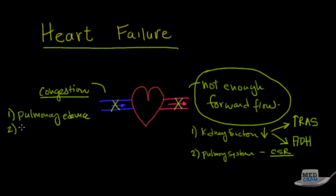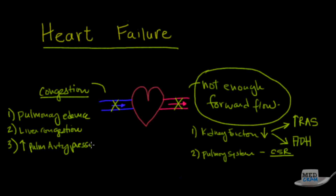If the congestion keeps backing up, the next organ it goes to is the liver — liver congestion. You could see the AST and ALT go up. This is also known as nutmeg liver because a cross-section of the liver would look like nutmeg. You would also get elevated pulmonary artery pressures and pedal edema. These constellations of symptoms can be divided into problems associated with poor output and problems associated with poor input or congestion, and in any heart failure you could see both types of symptoms.